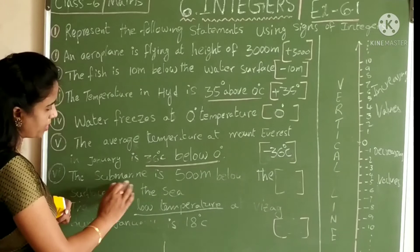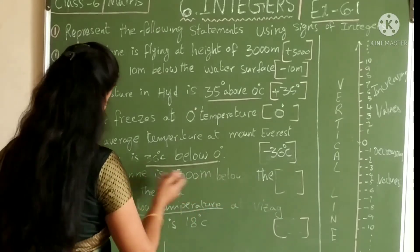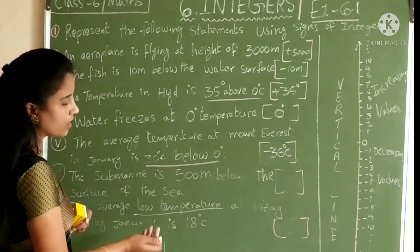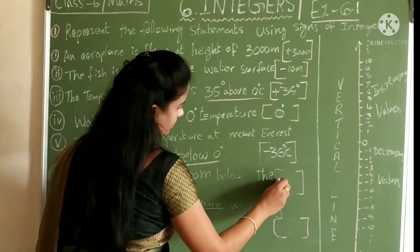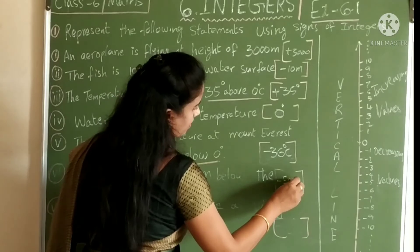The submarine is 500 meters below the surface of the sea. Below surface of the sea means it is decreasing. Minus 500 meters.